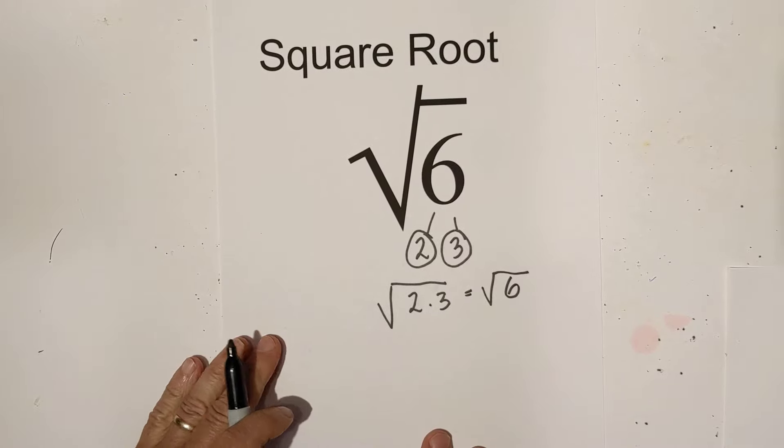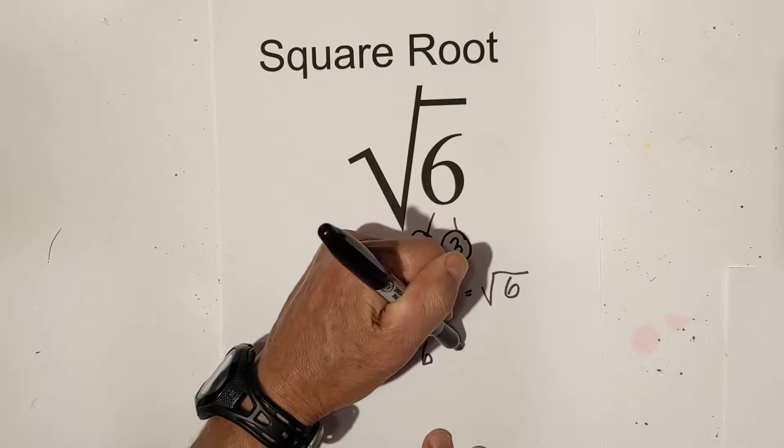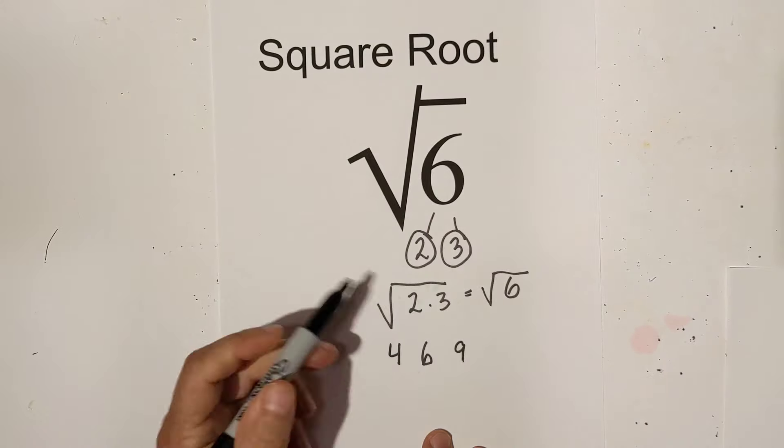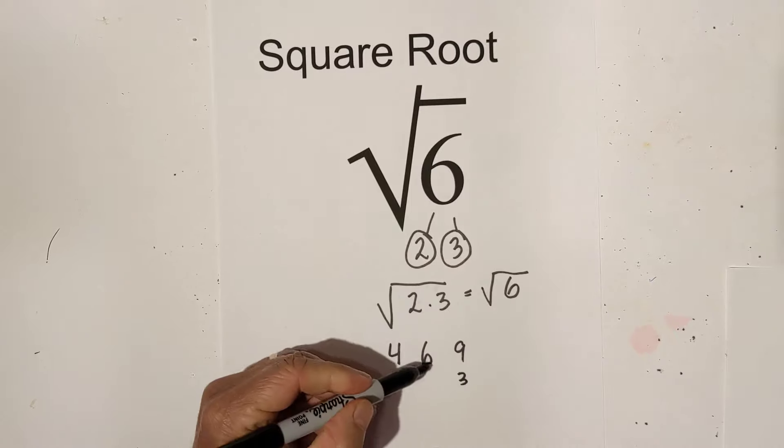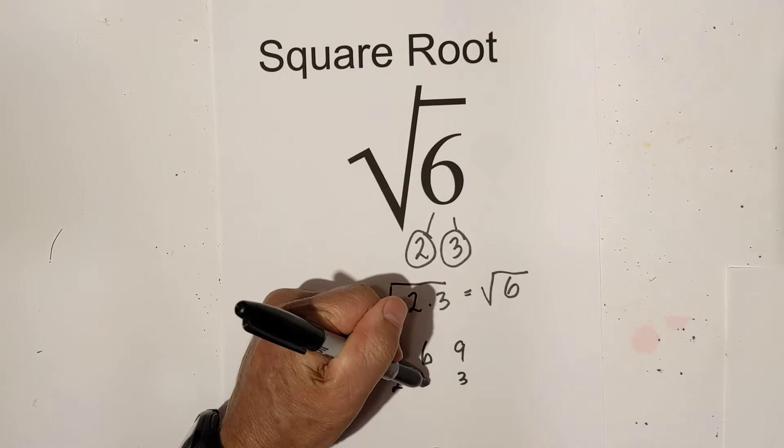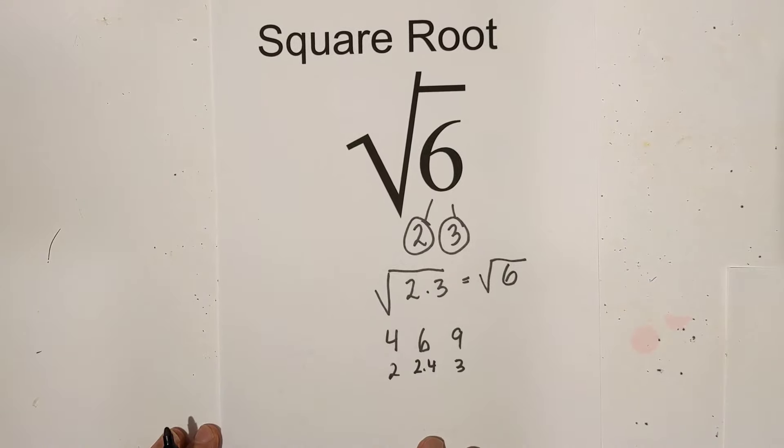Now, what if we want to estimate it? Well, we have the number 6. You have 4, which is a perfect square of 2, and 9 is the square root of 3. So let's write these. We have 2 and 3, and 6 is somewhere in between, so you could estimate it to be about 2.4. That's an easy way to estimate.